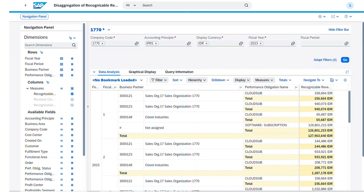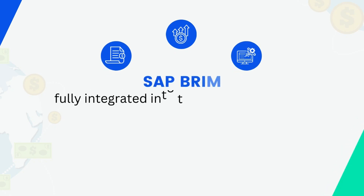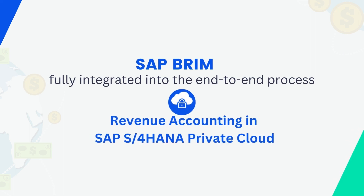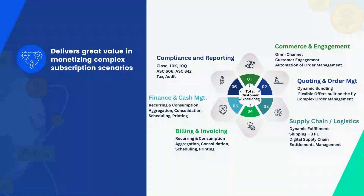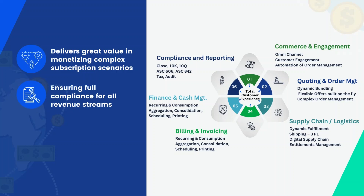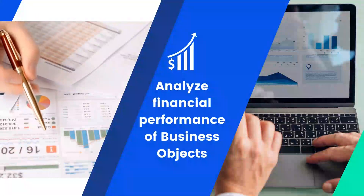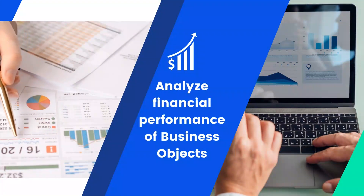To bring it all together, SAP BRIM is fully integrated into the end-to-end process for revenue accounting in SAP S/4HANA Private Cloud. The solution delivers great value in monetizing complex subscription scenarios and ensuring full compliance for all revenue streams being recognized. It automates revenue recognition for subscriptions through real-time updates from billing and other operational documents. With integrated reporting, you can view different levels of reports and easily analyze the financial performance of your business.